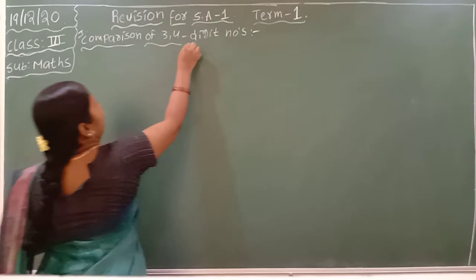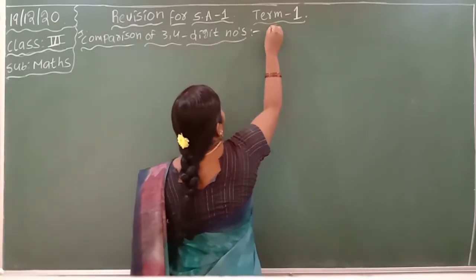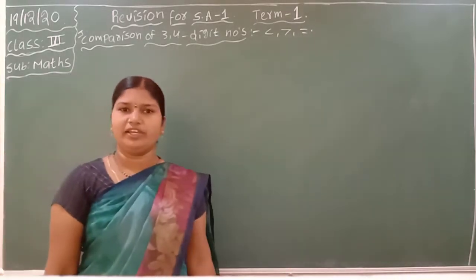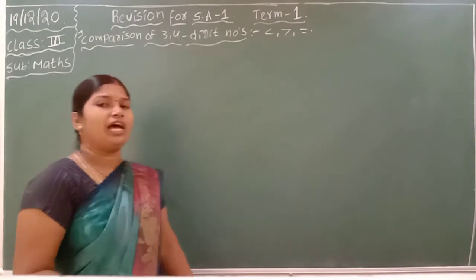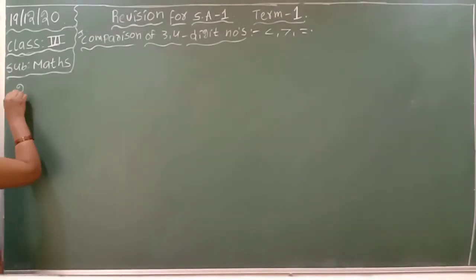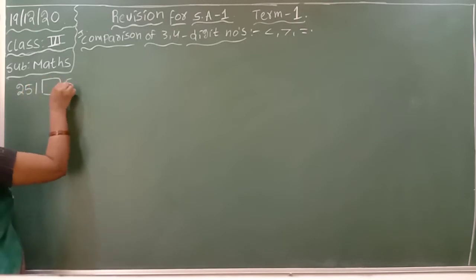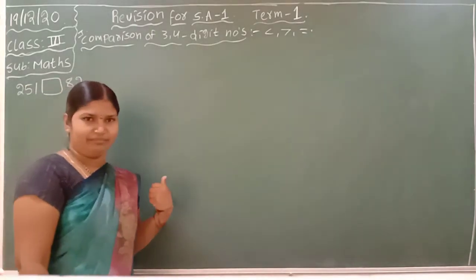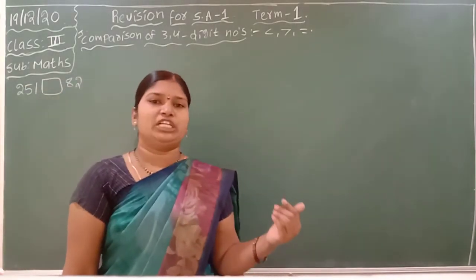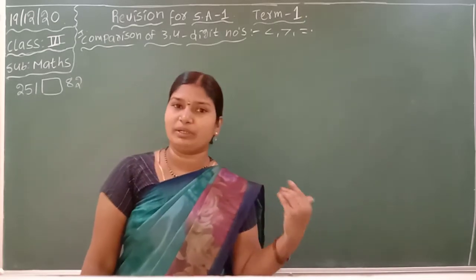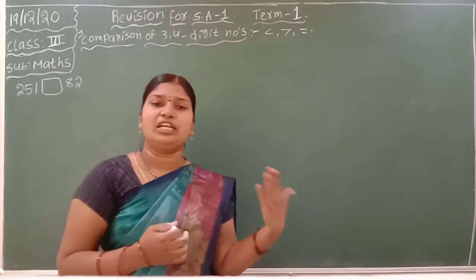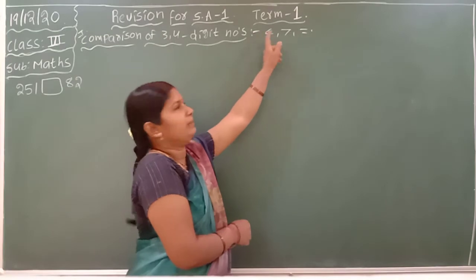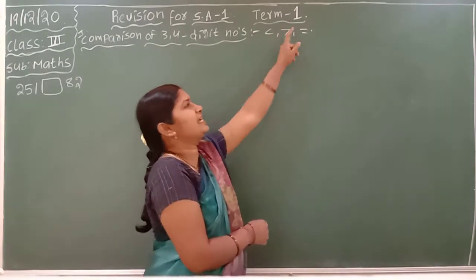Comparison means what we are keeping — we are keeping less than, greater than, or equal to in the given box. If you are getting confusion in less than and greater than symbols, you have to remember which is the big number. That big number side opens. Small number side closes. Big number side opens, small number side closes — like this you have to remember.